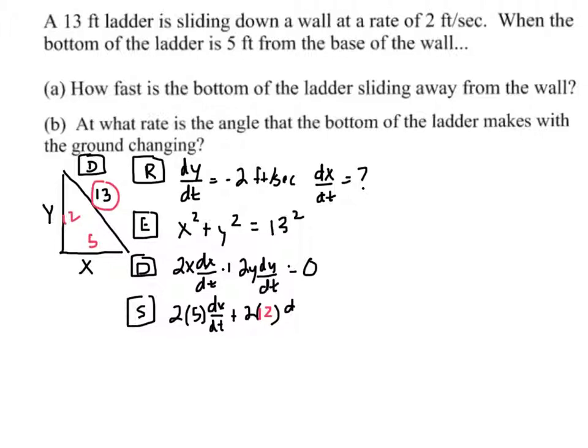Oh, and I know what dy dt is. It's negative 2. So if you solve this, you end up with 24 fifths or 4.8 feet per second.